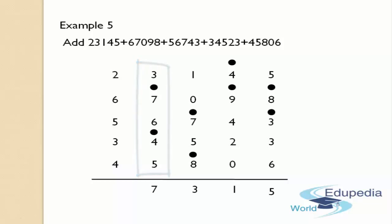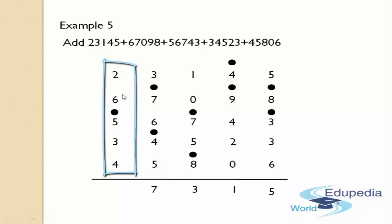6 plus 3 gives 9, and 9 plus 5 gives 14, a two-digit number, so leave 1 and put a dot on top of 5. The remaining number is 4. Again, 4 plus 6 gives 10, a two-digit number, so leave 1 and put a dot on top of 6. The remaining number 0 should be added to 2 — whatever number is added to 0, you get that number only — so you get 2. Write that 2 in the answer's place.